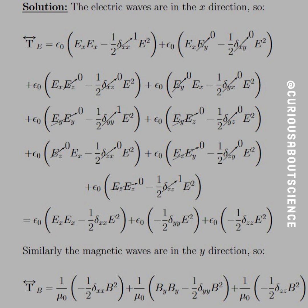Let's take this chunk by chunk. If we only consider the electric component — the first part of the Maxwell's stress tensor — we note that the electric field is only in the x direction. So delta_xx goes to 1, delta_xy goes to 0, E_y goes to 0, E_z goes to 0, and delta_xz goes to 0. Since we only have a one-component field in x, and the Dirac delta cancels to 0, this consolidates really quickly to the diagonal terms only.